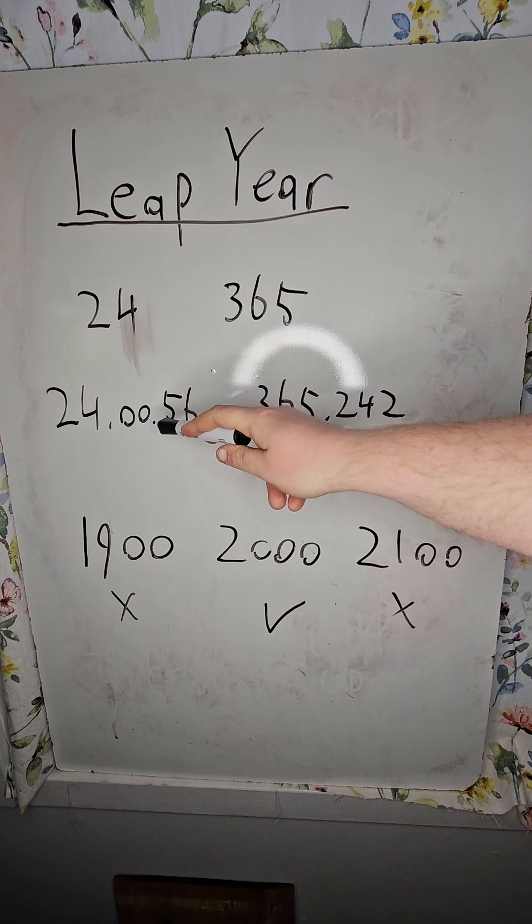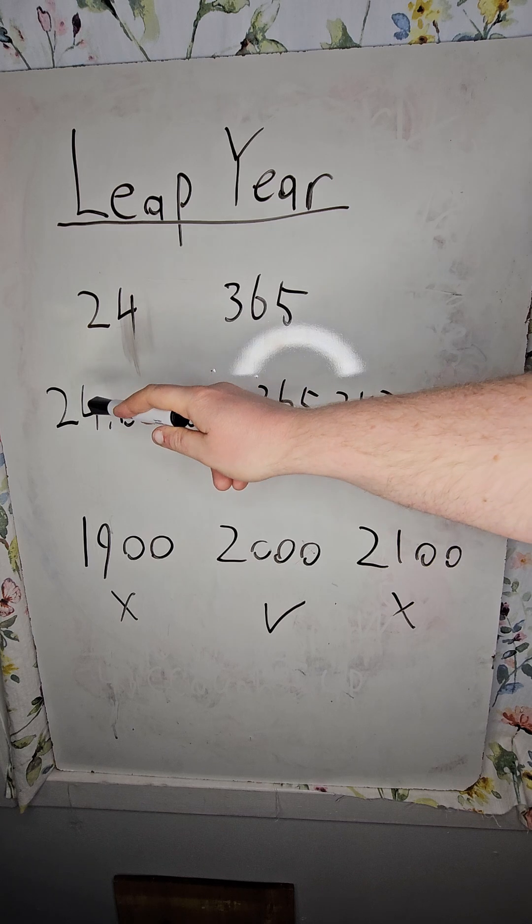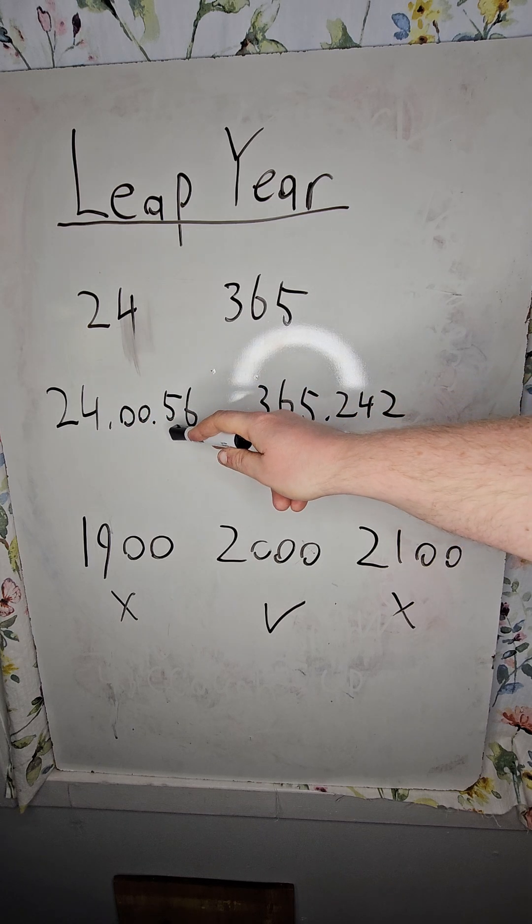The time of day, that is, the time it takes for the Earth to complete a full rotation, is 24 hours and 56 seconds.